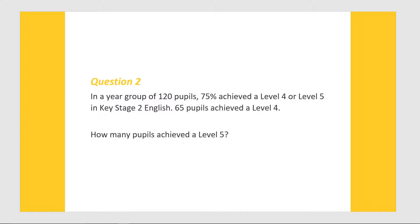In a year group of 120 pupils, 75% achieved a Level 4 or Level 5 in Key Stage 2 English. 65 pupils achieved a Level 4. How many pupils achieved a Level 5?